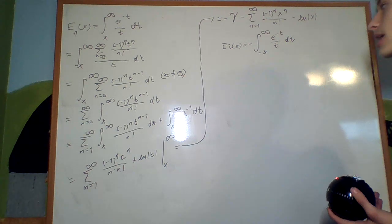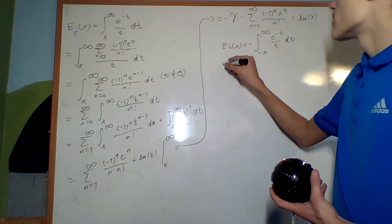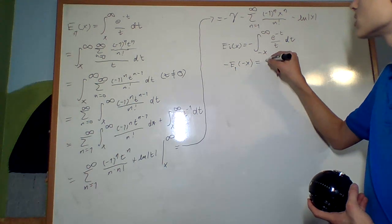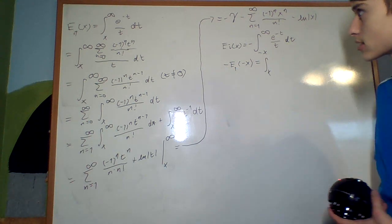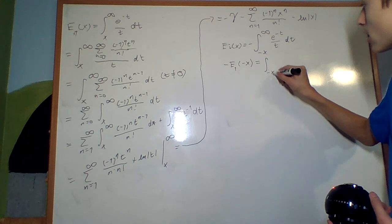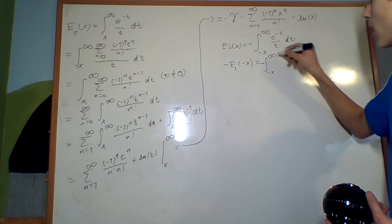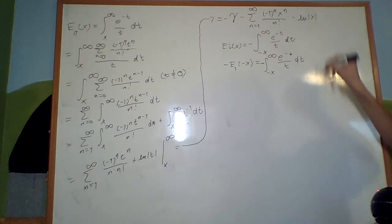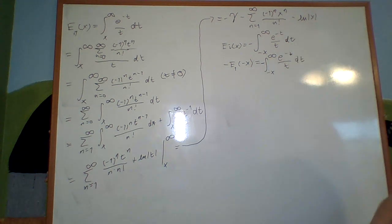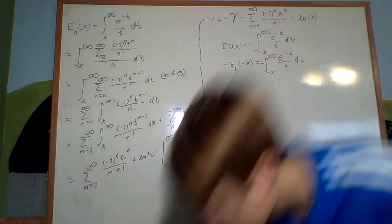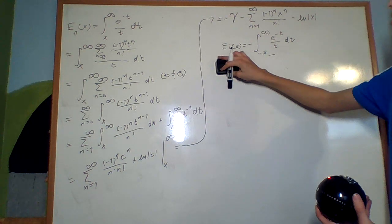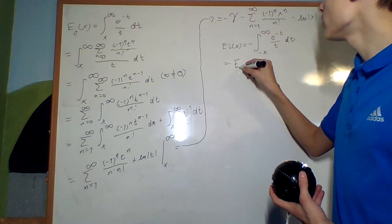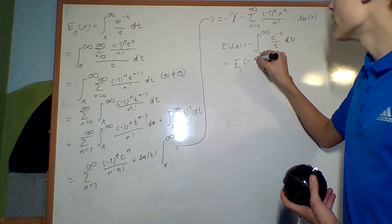What's the point of doing that? Well, if I compute negative E1 of negative x, this is going to be the integral from negative x to infinity of e to the negative t over t dt — and that's exactly Ei of x. So we can say that Ei of x equals negative E1 of negative x.